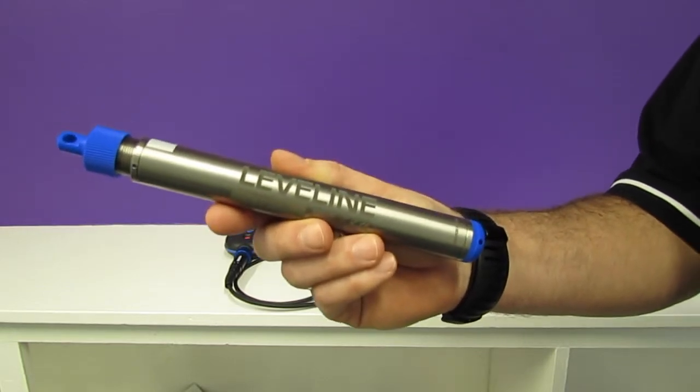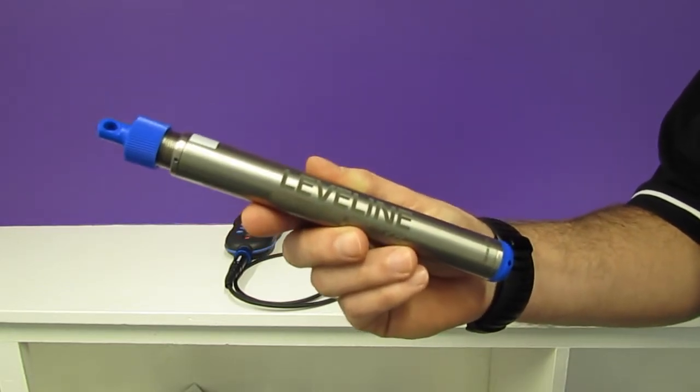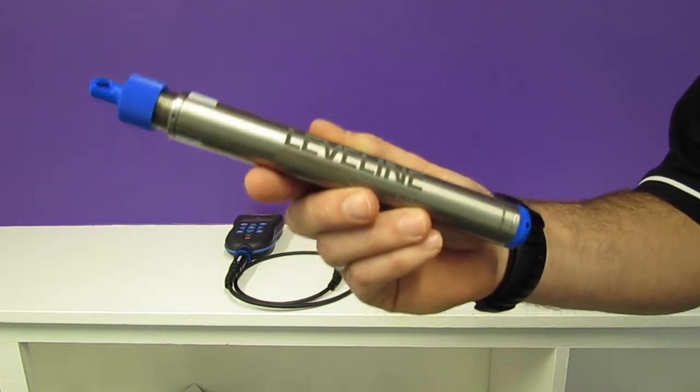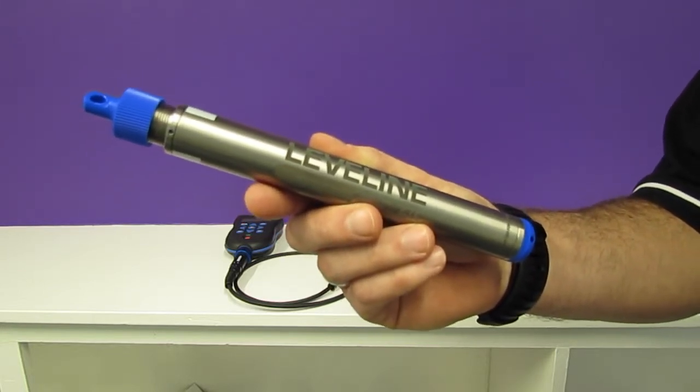It's worth noting that both the Levelline and the Levelline Eco have replaceable batteries. So once you've purchased your Levellogger, you can keep it running for years upon years simply by replacing the batteries.